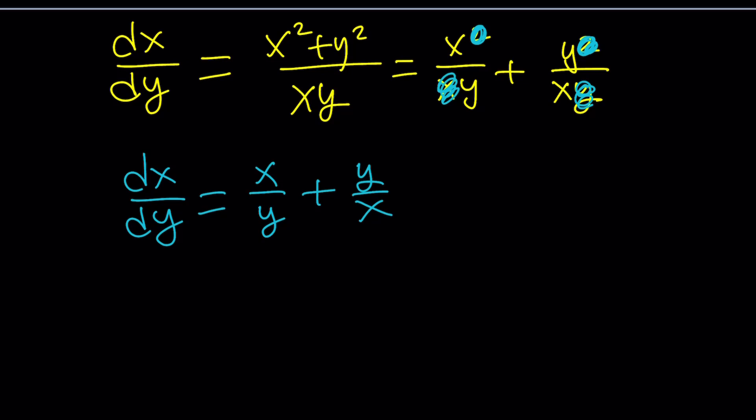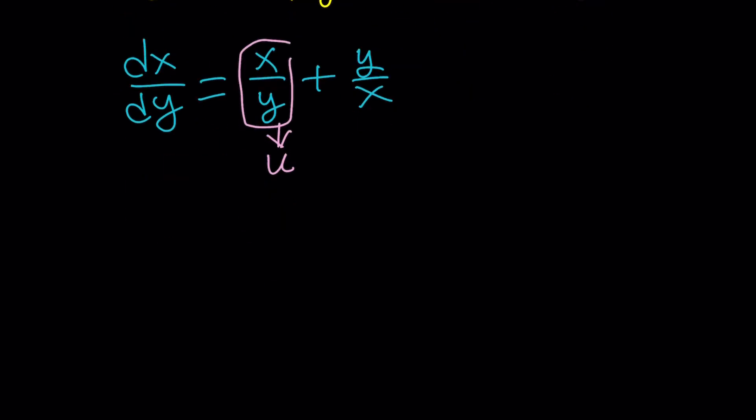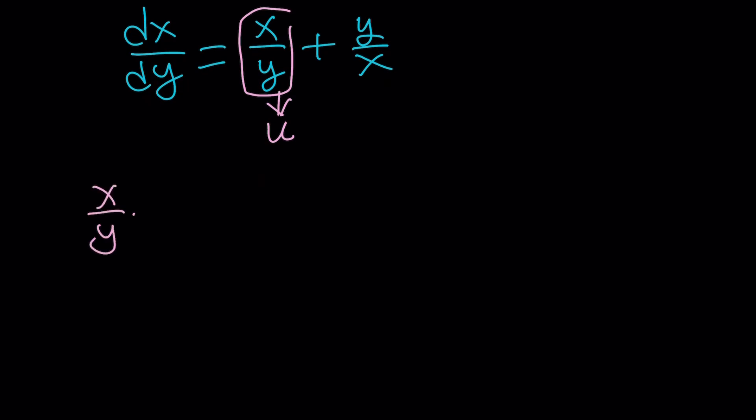Now, at this point, we may use substitution. No big deal. I'm going to call the first expression u, so x/y will be u. And from here, x will be yu. Now notice that I wrote this as dx/dy. So I'm treating x as a function of y instead of y as a function of x, which is dy/dx.